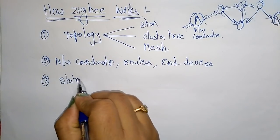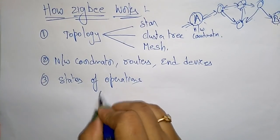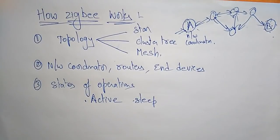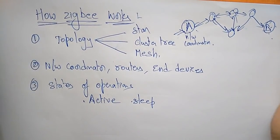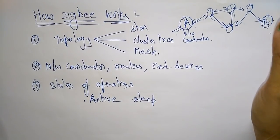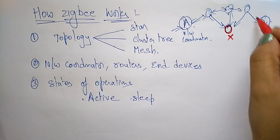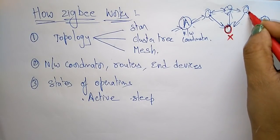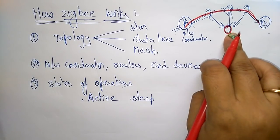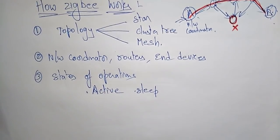States of operation: ZigBee, based on the state of operation, is either in active or sleep state. Active means whatever devices and routers you are using in the network should be in active state. Suppose a node is in sleep state — the network will not pass through it. It passes from one active node to another active node, avoiding the sleeping node. So the state of operation may be active or sleep.